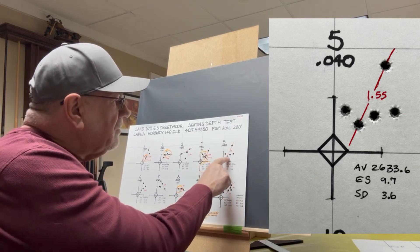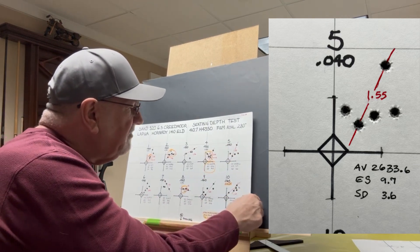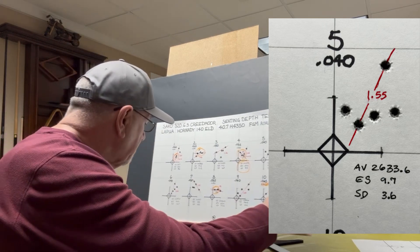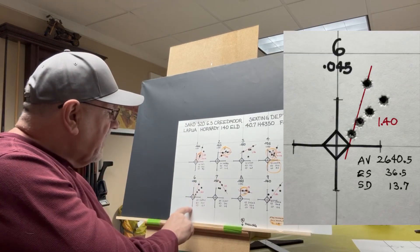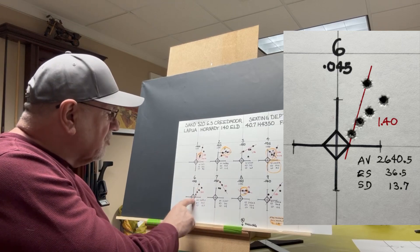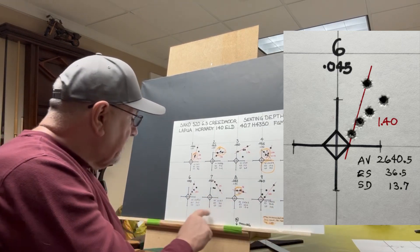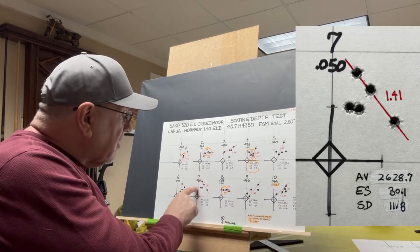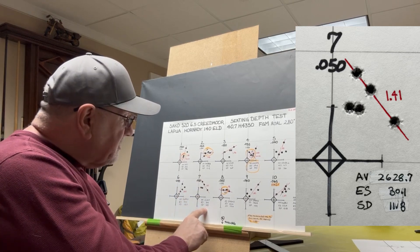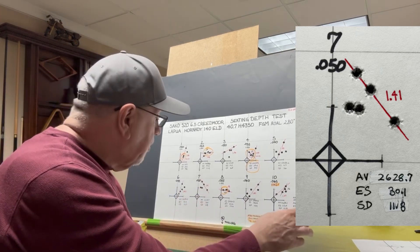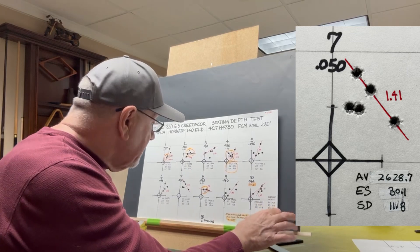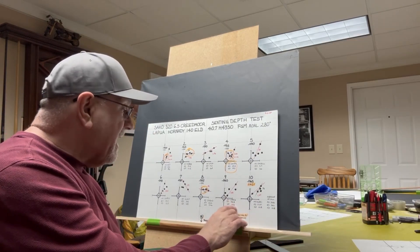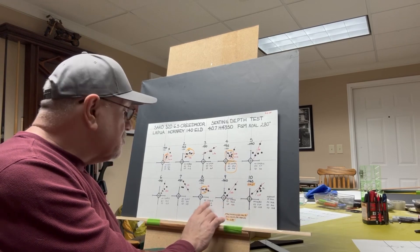Okay, at 40 thousandths off the rifling, we've got a group of 1.55. Even though we've got a standard deviation of 3.6, that doesn't look very promising. At 45 thousandths off the rifling, we've got a group of 1.4, so not really tight there with a standard deviation of 13.7. At 50 thousandths off, we've got a group of 1.41, and a standard deviation of 11.8. The standard deviations on these were really mostly good. The highest on these was 19.9, but most of these were pretty good.